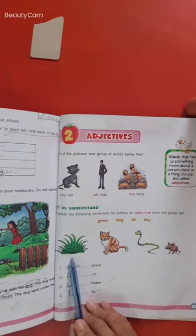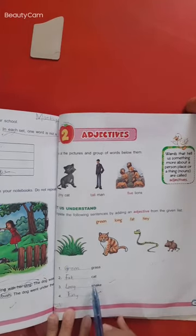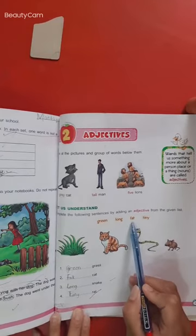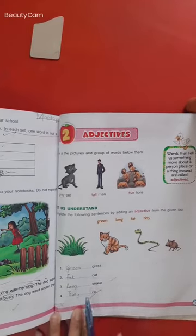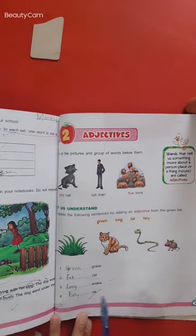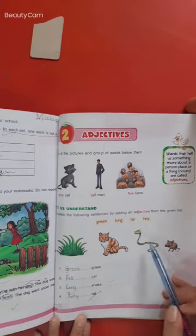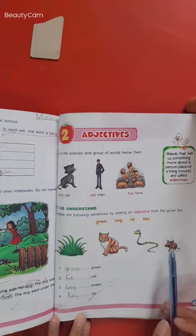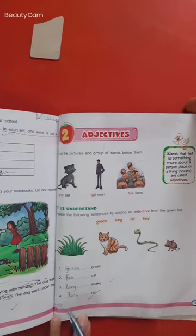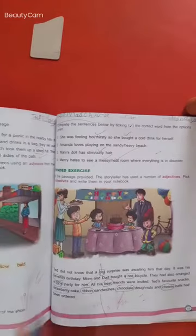Grass. You can see in the picture there is grass. So here we have written green. Next is cat. We have written fat here. Snake. Snake is a long animal, so we have written long. Rat. Rat is tiny. Here we have written tiny.